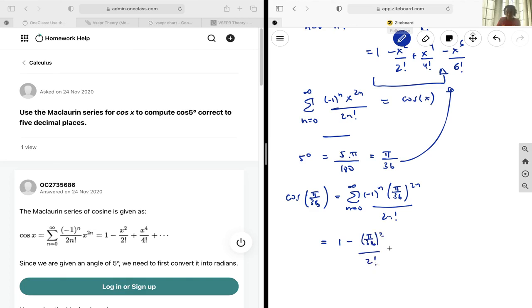squared over two factorial, plus pi over 36 to the power of four over four factorial. You can go on if you feel.